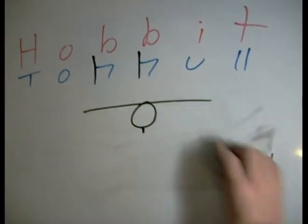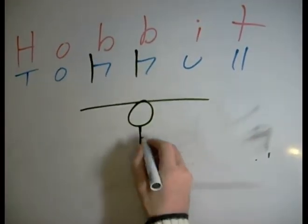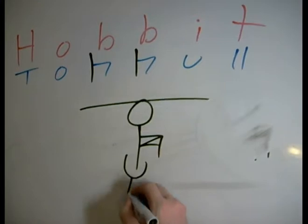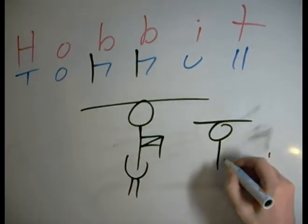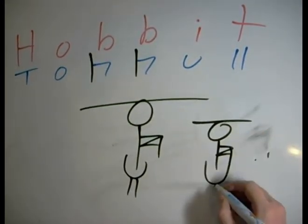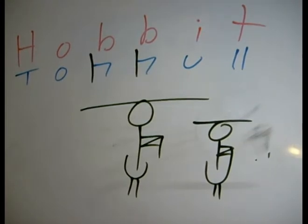So if we use that version, what do we get? We get I, T, or H, O, B, B, I. That is starting to really look like a person to me of some kind, some kind of stick figure.